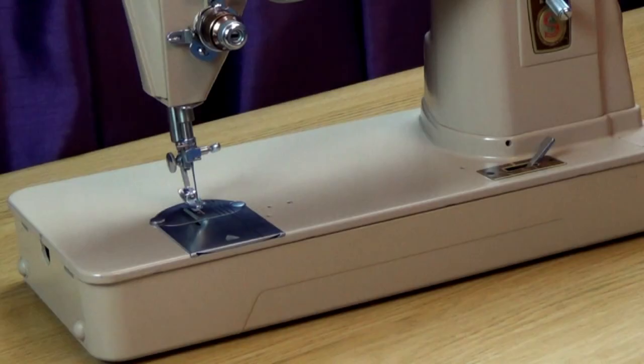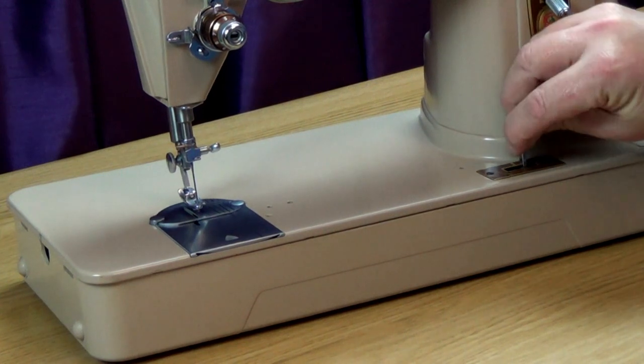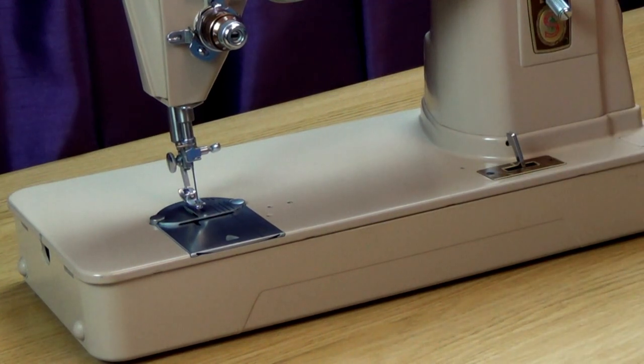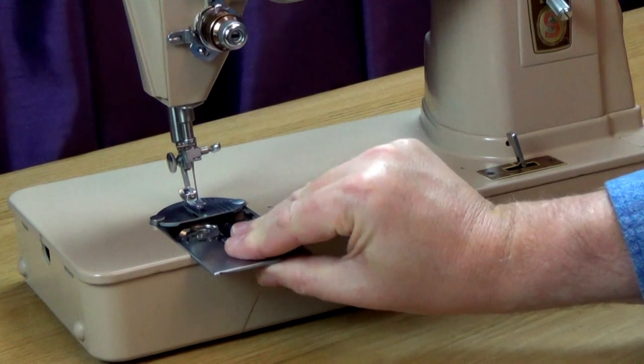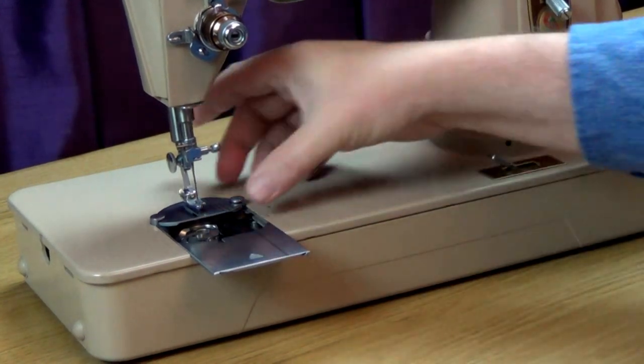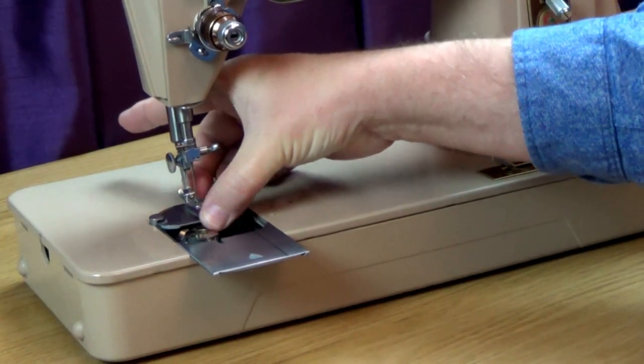Again, like many of the 400 range, the feed dogs don't drop for darning and free motion work. Rather, a lever lifts the plate up, so the feed dogs don't touch the fabric. Moving the lever further releases the feed dog plate completely for cleaning and lint removal.